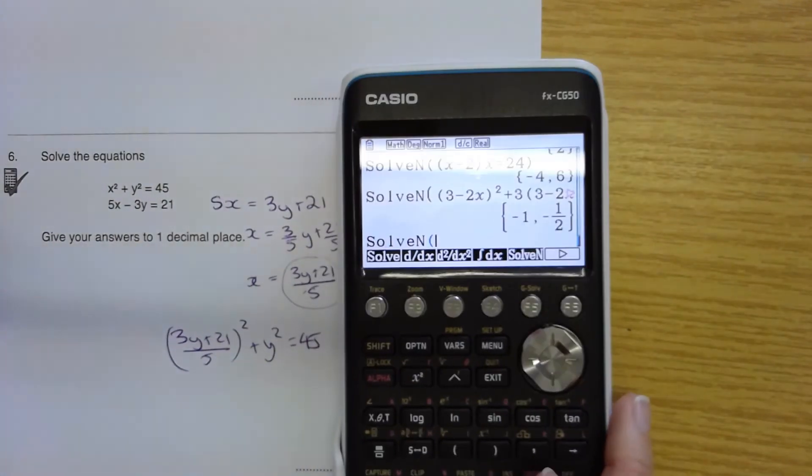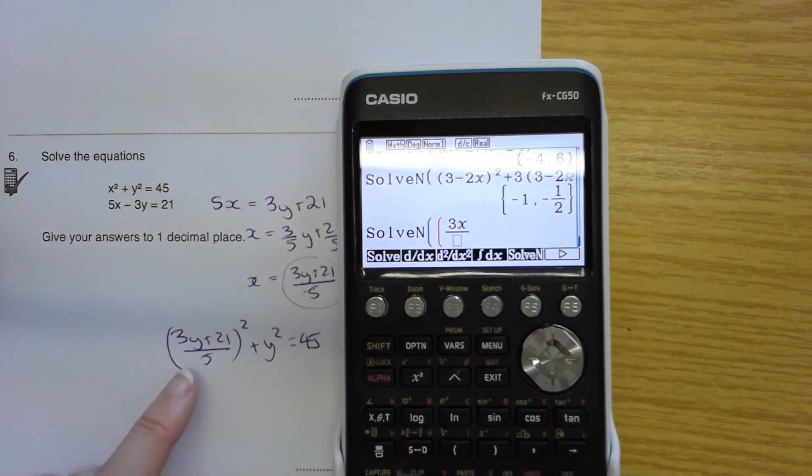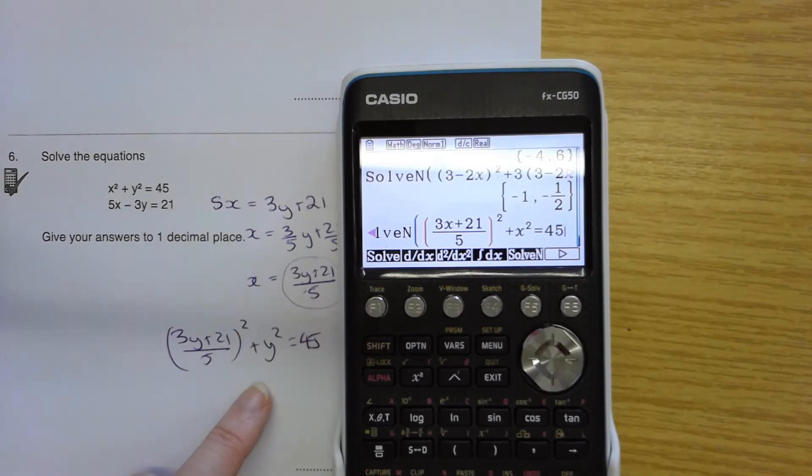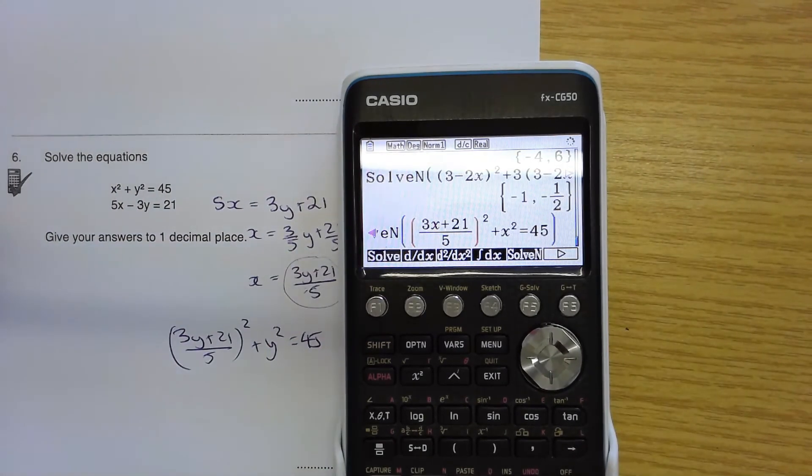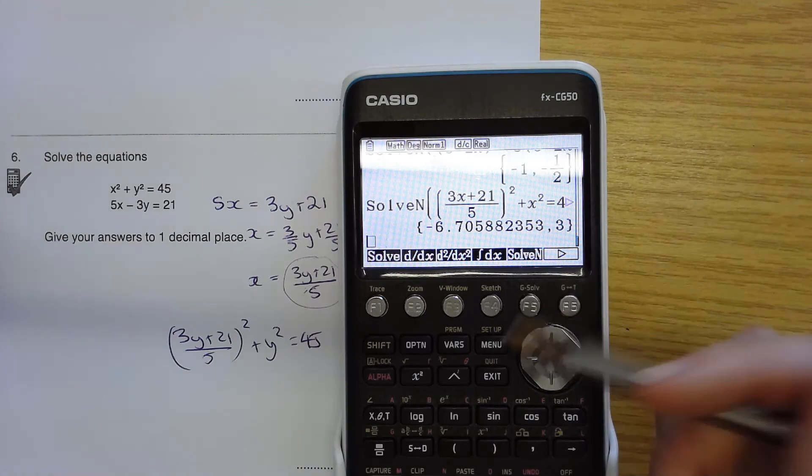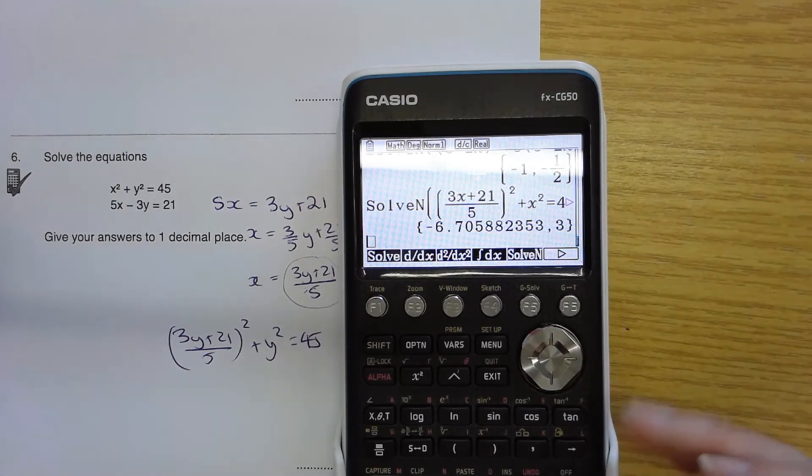Here, solve N. I have open bracket, fraction, 3 times a variable plus 21 over 5 squared, add variable squared equals 45. Close bracket. Check that my blue brackets exit. And what does it give me? It gives me here my list.